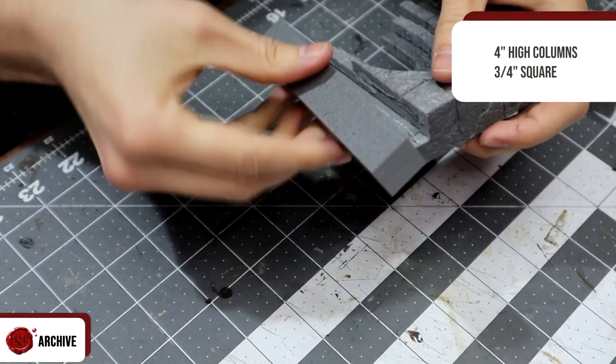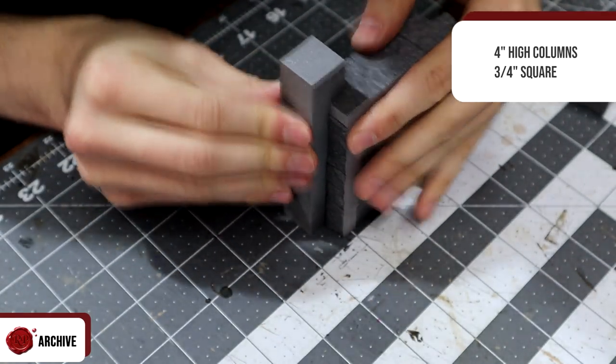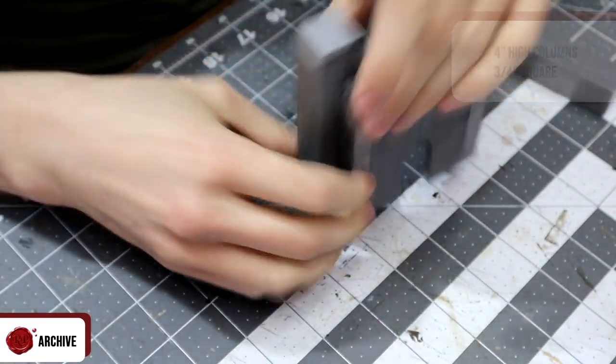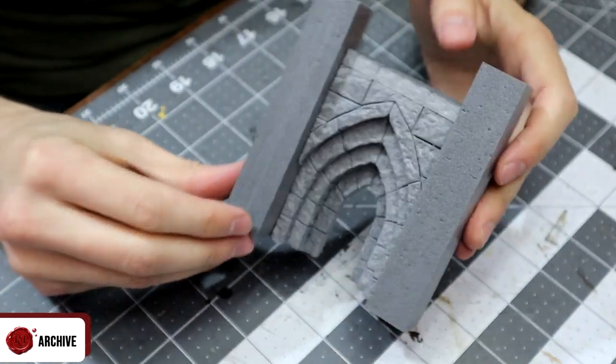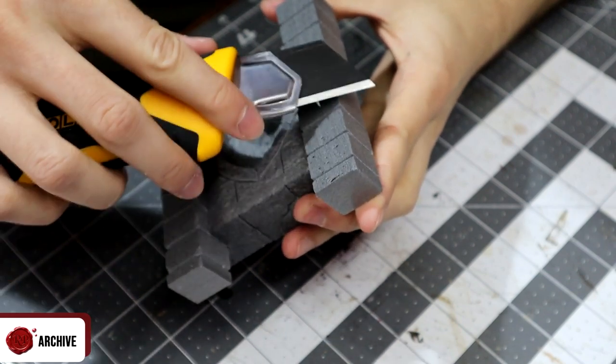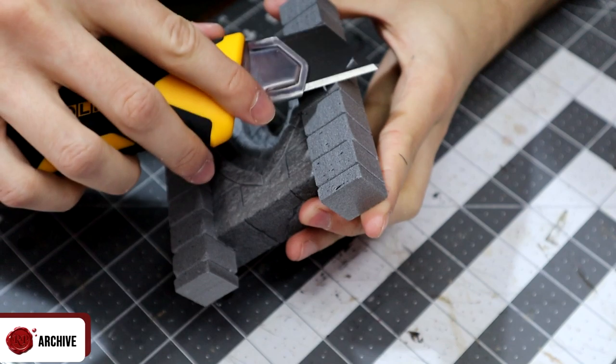Now it's time to add the columns which I wanted to be four inches high and three quarters of an inch square. I hot glued these into place on a slot on each side. The columns themselves I carved in some half inch high blocks and textured them as stone with tin foil again.